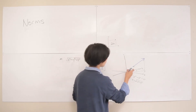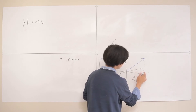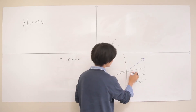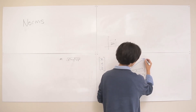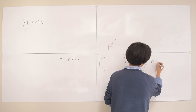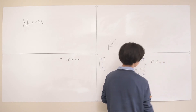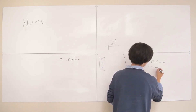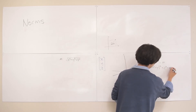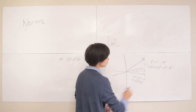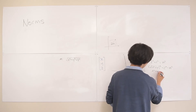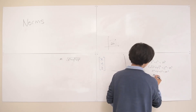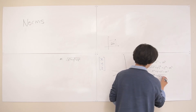Now we just need to add the z component. We do k squared plus z squared equals m squared. Since k squared equals x squared plus y squared, we substitute to get x squared plus y squared plus z squared equals m squared. Taking the square root, m equals the square root of x squared plus y squared plus z squared. So the magnitude in three dimensions follows the exact same pattern.